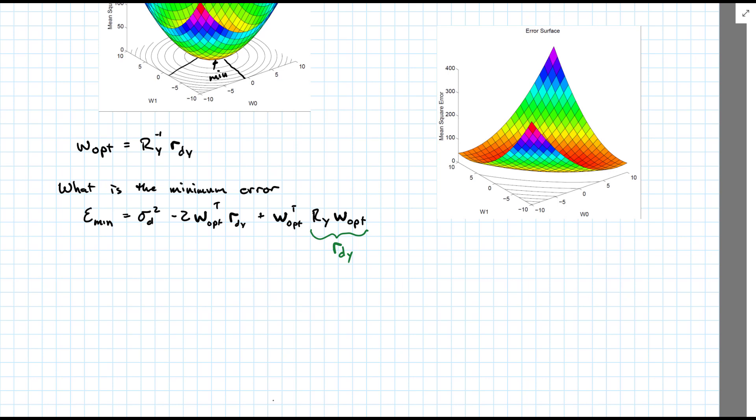So now, this term and this term have the same w_opt transpose r_dy. Minus 2 in the first instance and plus 1 in the second. So, this just falls right out as minus w_opt transpose times r_dy.